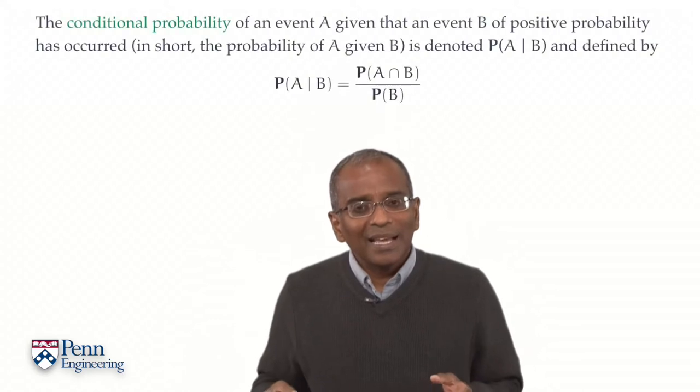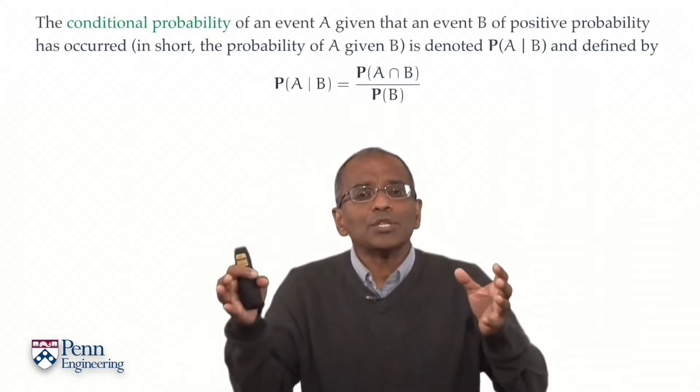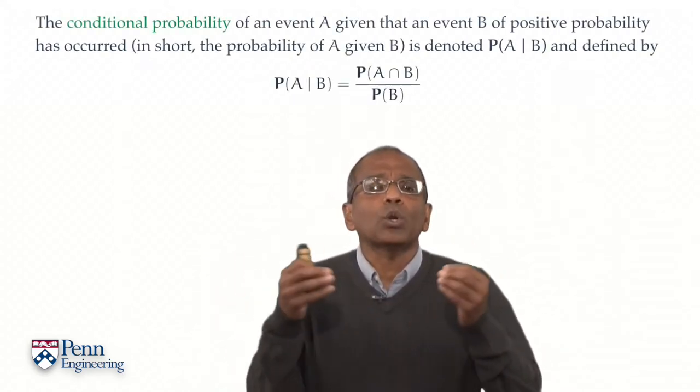We have now come to a right understanding of how to fold inside information about the occurrence of an event into our probabilistic framework. Before we summarize, we should take a look at the definition again and examine it to see whether we can draw any more conclusions from it.